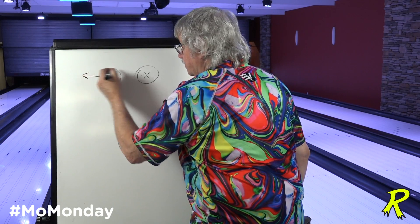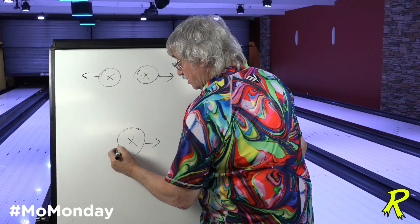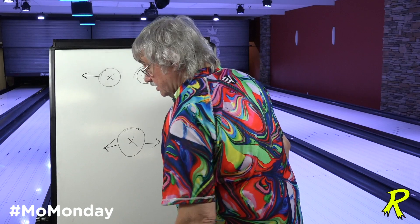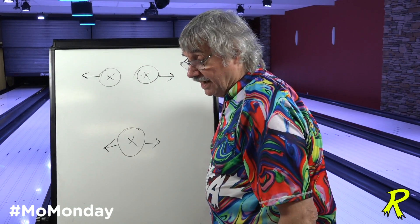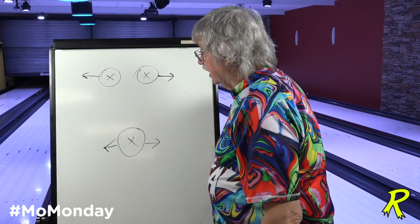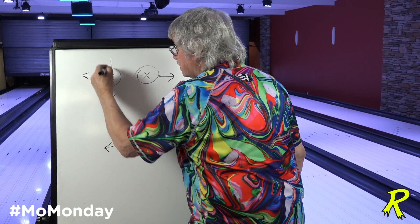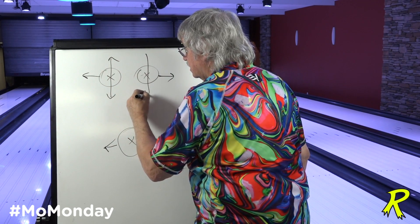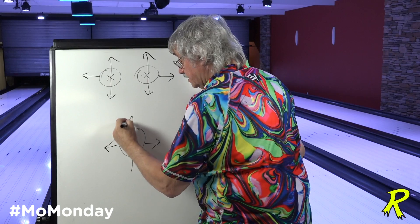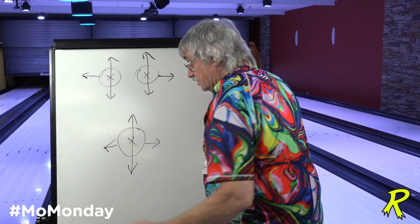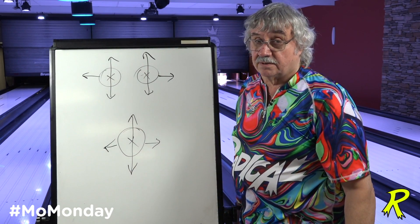Lateral pitches are basically used to fit the contour of the hand, the shape of the hand. Forward and reverse pitches are used to increase or decrease the strength of each one of the holes.